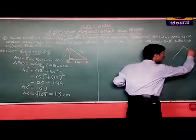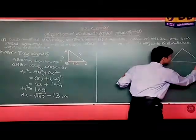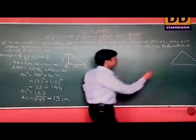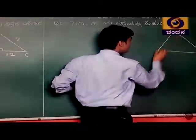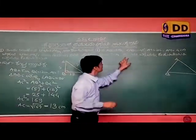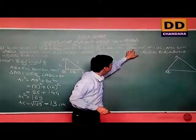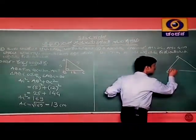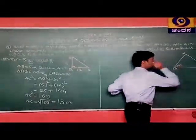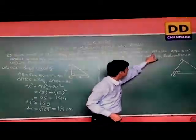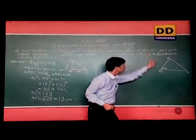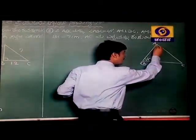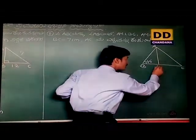ABC is a normal triangle. ABC is a normal triangle.